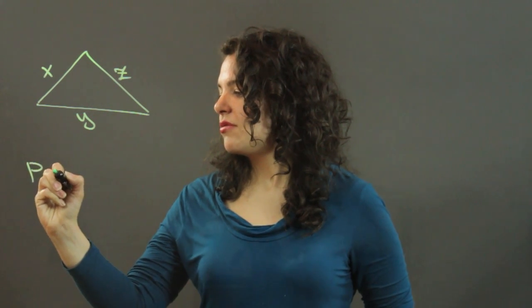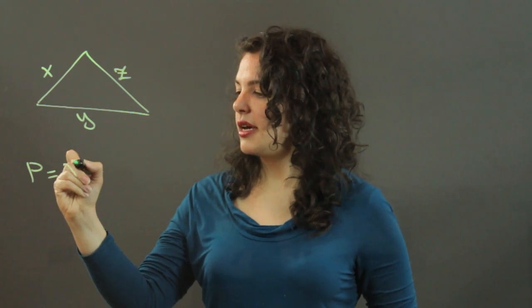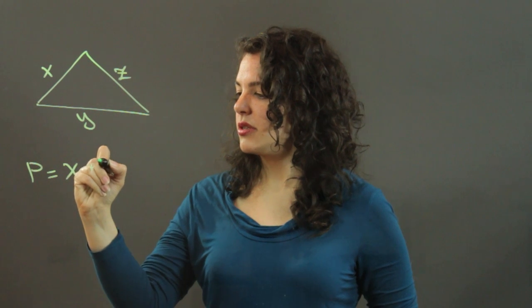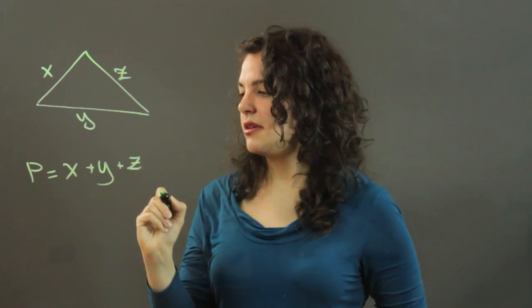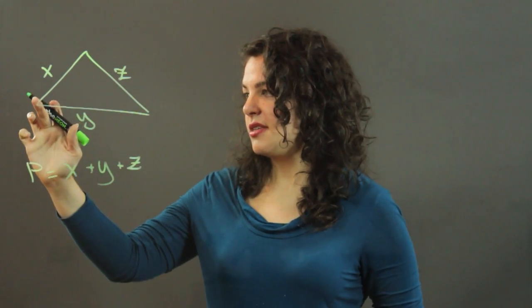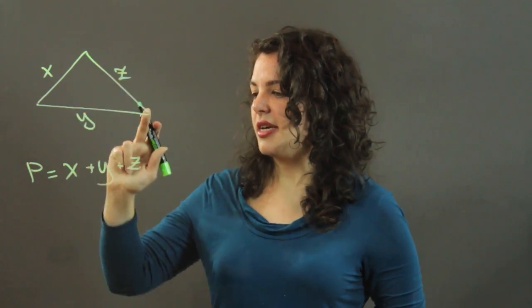An expression for the perimeter, I'm going to say P, would be x plus y plus z. It would be the length of side x plus the length of side y plus the length of side z,